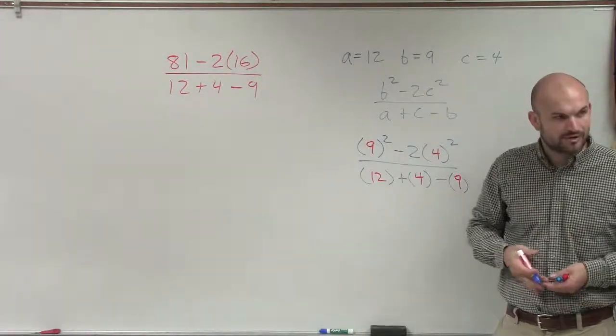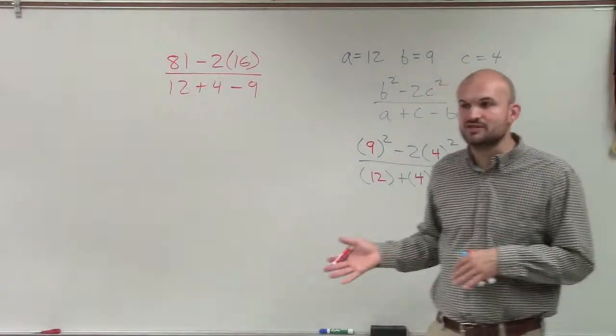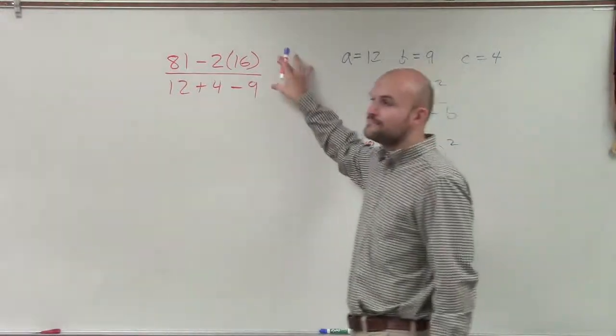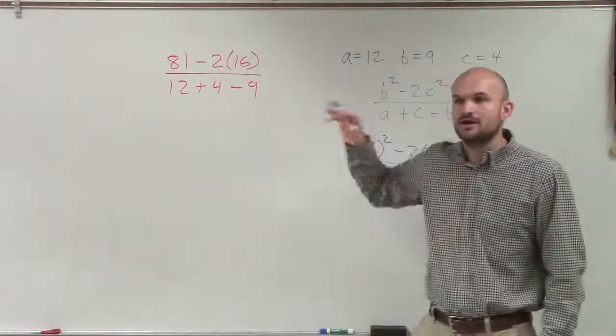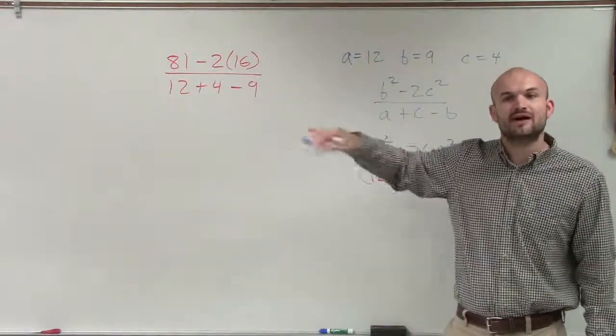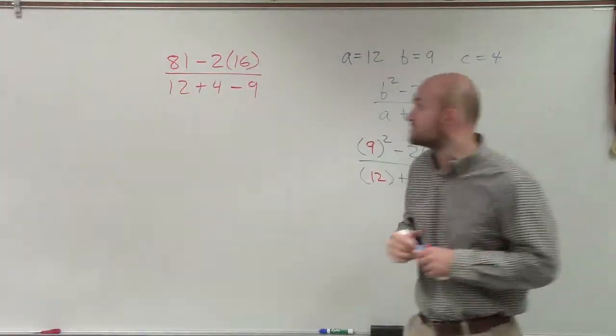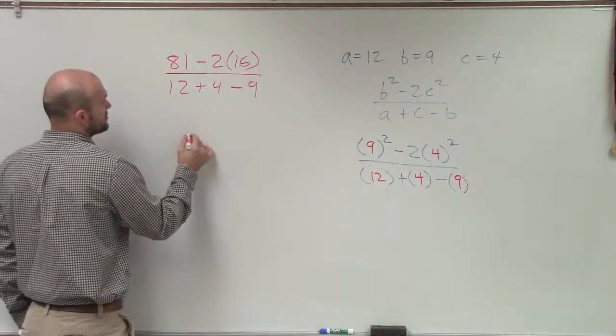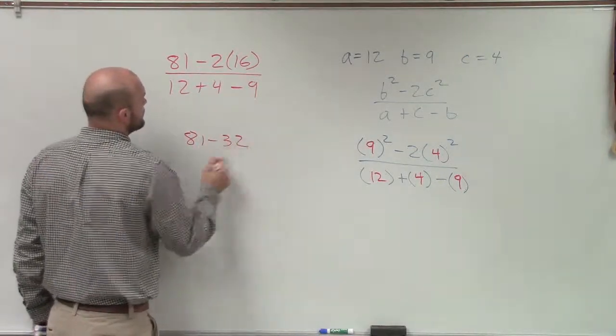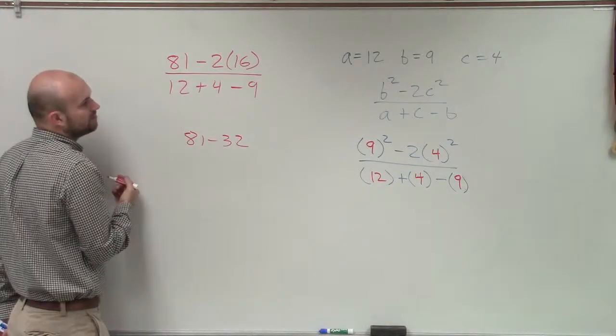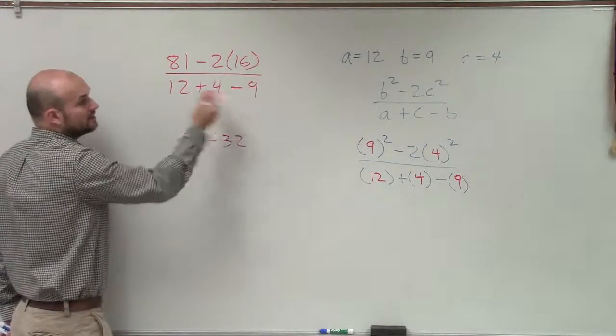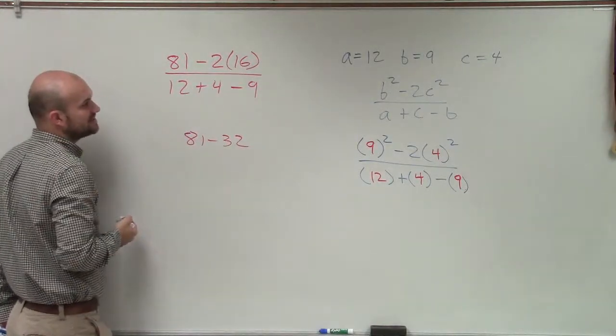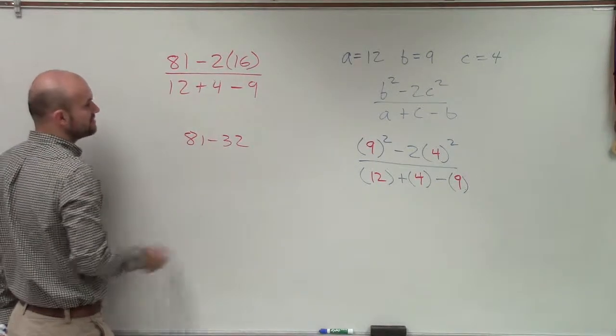Now, once you do the powers, it's multiplication and division from left to right. And we're going to, when we have a rational expression, we're going to simplify our numerator, simplify our denominator, and then simplify the whole expression. So I have 2 times 16 is 32, so I have 81 minus 32. And then I can just do this together. 12 plus 4, we always go from left to right. 12 plus 4 is going to be 16, minus 9 is going to be 7.